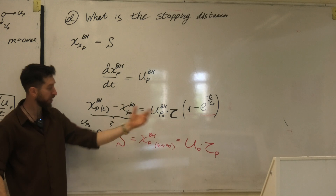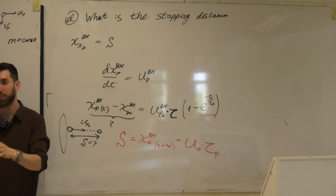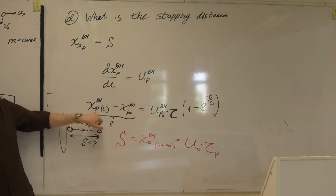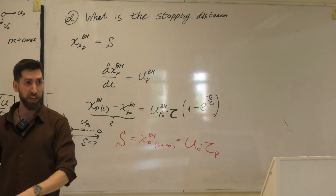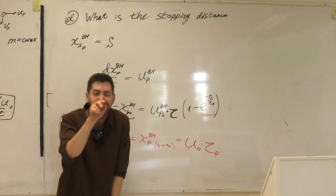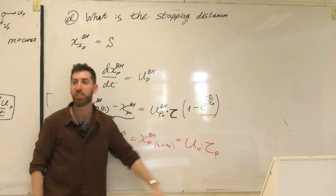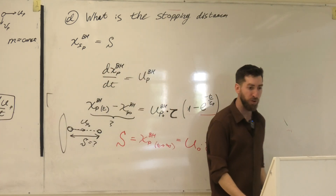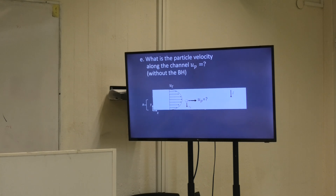So if you know when a person stops their breath — say after 3 seconds — you can calculate where the particle is at that moment, then add the stopping distance s = u_p0 × τ_p to get the final resting position. If τ_p is very small the stopping distance is short; if τ_p is large the particle travels further before stopping.